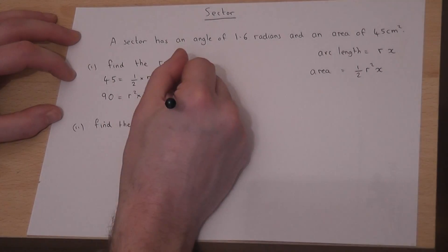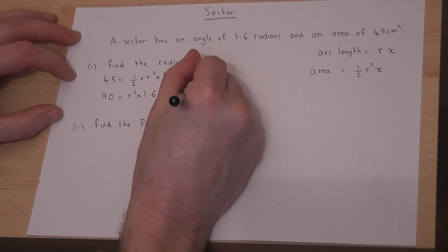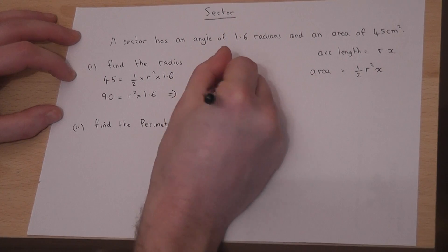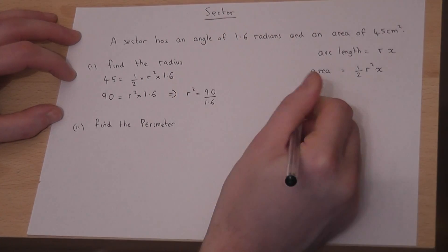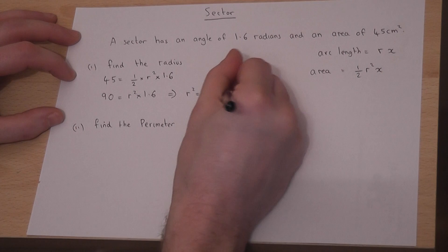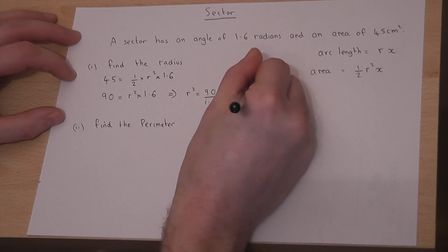I can then divide by 1.6, so r squared equals 90 over 1.6, which works out at 56.25.